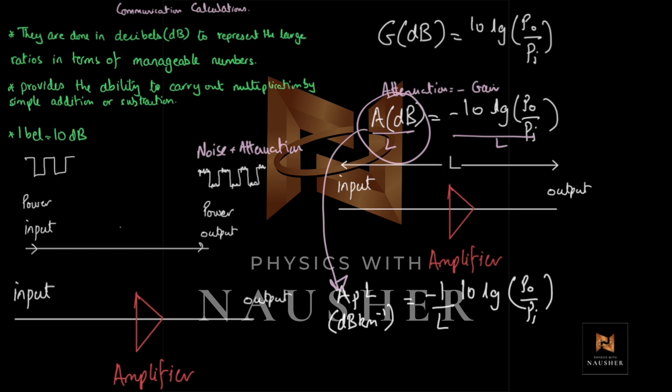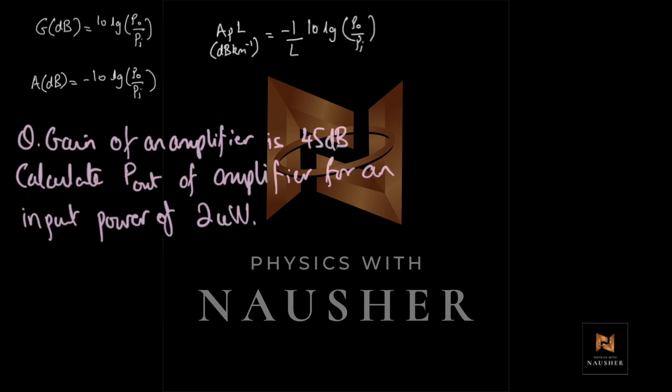Don't worry, we'll be doing calculations so you will know exactly how to use these numbers. So, I thought I should remove all of that clutter, bring the three key equations in front of you and now, let's attempt this question. The gain of an amplifier is 45 decibels. Calculate the output power of the amplifier for an input power of 2 microwatts. So, you had your amplifier. You give it an input of 2 microwatts. They're asking you what is the output power.